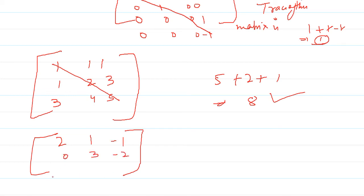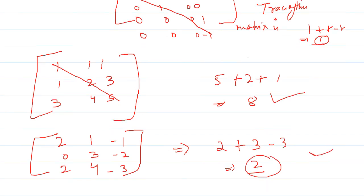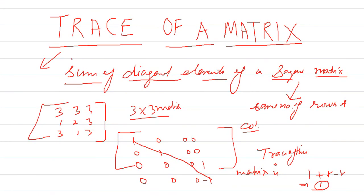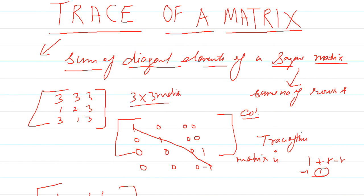So here the trace is simply 2 plus 3 minus 3, so here 2 is the trace of the matrix.